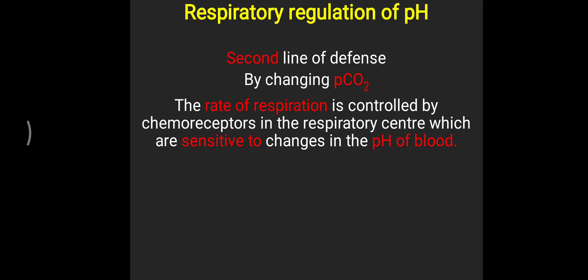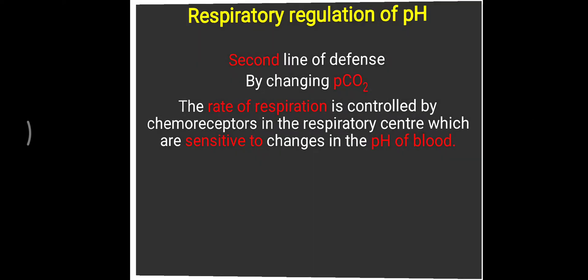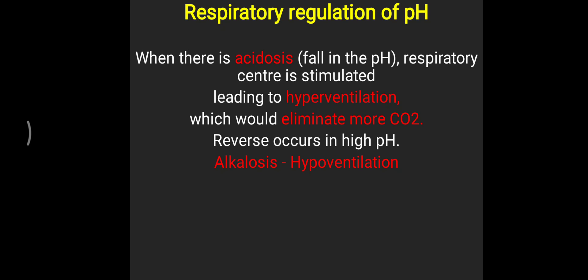Respiratory rate is normally in the range of 12 to 16 per minute, but respiration can be increased or decreased as per the pH to maintain it. When there is acidosis — meaning pH falls below 7.35 towards 7.3 or less — the respiratory center will be stimulated, leading to hyperventilation. Excessive carbon dioxide will be eliminated from the body, helping to bring pH back toward the normal range of 7.35 to 7.45.